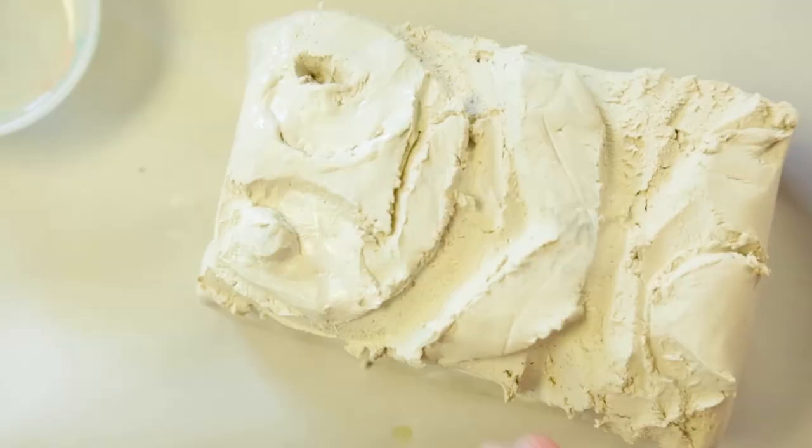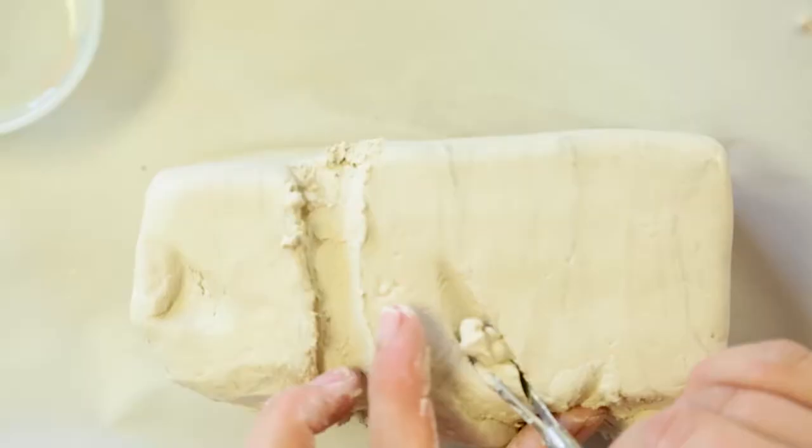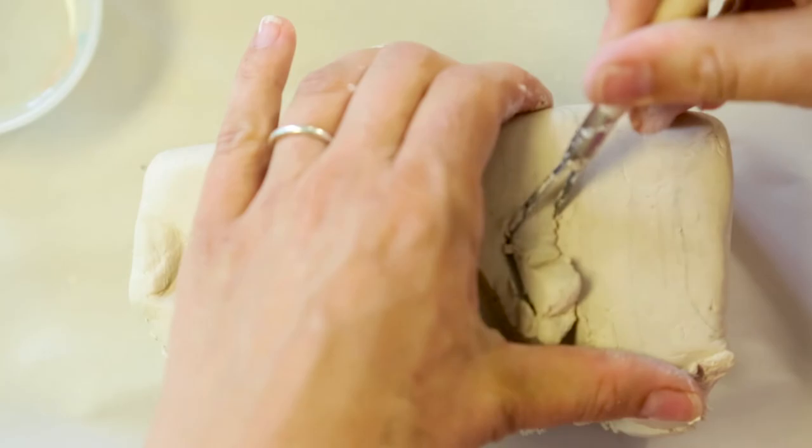Continue to remove the clay until you have changed the shape of the block. Turn your sculpture to work on the sides, the back, and the top.